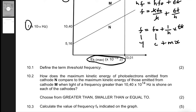Question 10.2 asks: how does the maximum kinetic energy of photoelectrons emitted from cathode N compare to those emitted from cathode M when light of frequency greater than 10.4 times 10 to the 14 hertz is shone on each cathode?